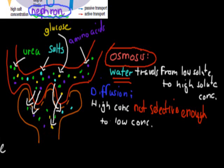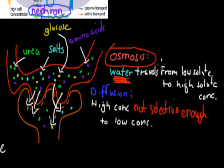The syllabus dot point also asks why osmosis is not good enough by itself. Osmosis deals with water — water travels from low solute to high solute concentration. But urea itself is not water. So if you want to get rid of urea, osmosis won't help us; it will only help us remove water. Those are the reasons why diffusion and osmosis are not good enough.